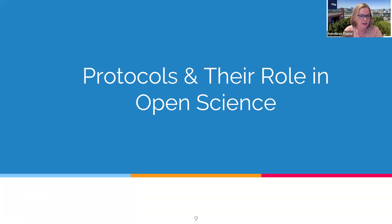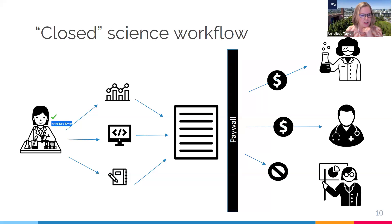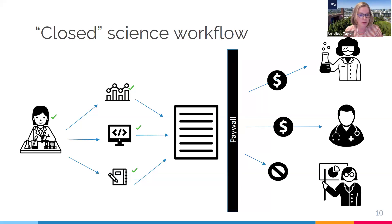Now talking about open science and how open protocols relate to it. It's helpful to look at the traditional research workflow, which we can refer to as a closed science workflow. This graphic is one my colleague Ariel Dierdorf and I use when teaching our Open Science 101 class. A researcher is doing research: producing data, writing code to analyze that data, and documenting research processes — all feeding into a publication. That publication is the only part of the research process that ends up being shared publicly. However, even the publication is behind a paywall.